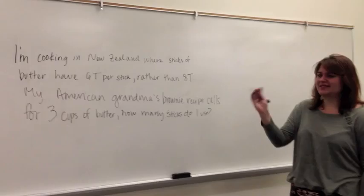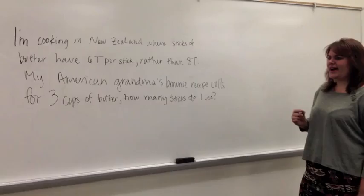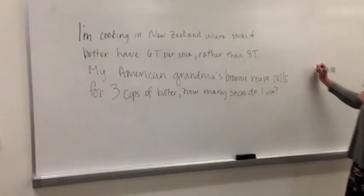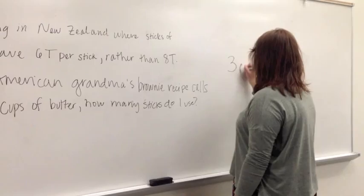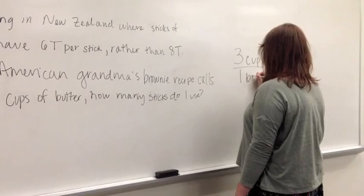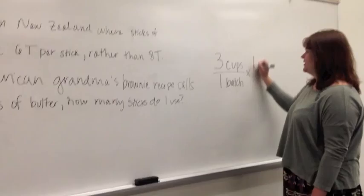And I want to know how many sticks I'm going to be using of six tablespoon New Zealand butter. So I can figure this out by using unit analysis and by knowing how to cancel other units. So I'm going to start off with my three cups over one batch of brownies.